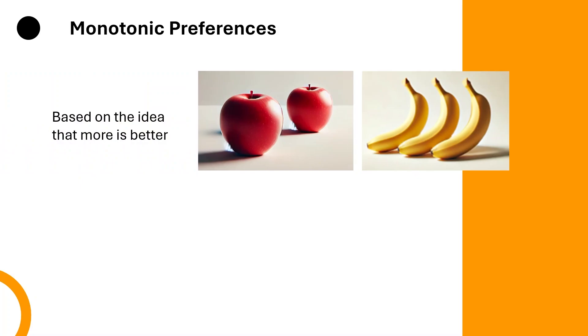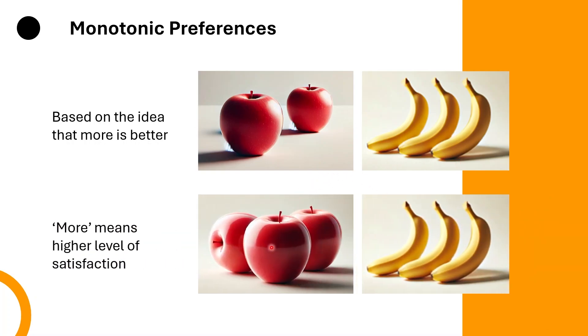For example, if you are deciding between two bundles, one with two apples and three bananas and another with three apples and three bananas, you would always prefer the second bundle because it has more apples without reducing the number of bananas. Consumers always prefer more of a good as it offers him a higher level of satisfaction.